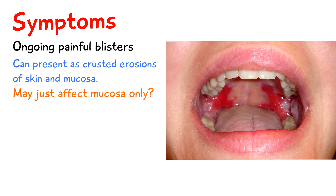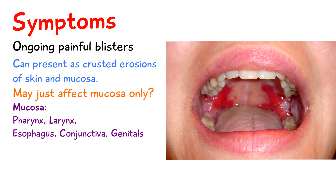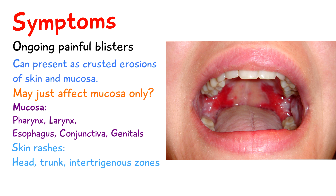In the mouth, blisters can show up in the oral cavity, but they can also present in the pharynx, the larynx, the oesophagus, the conjunctiva, and at the genitals. Skin rashes tend to be on the head, trunk, and intertriginous zones.